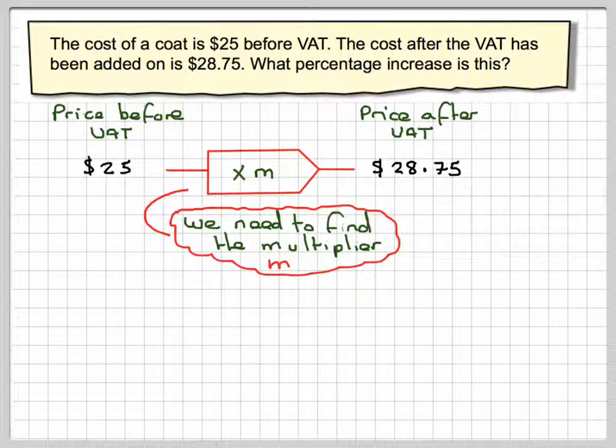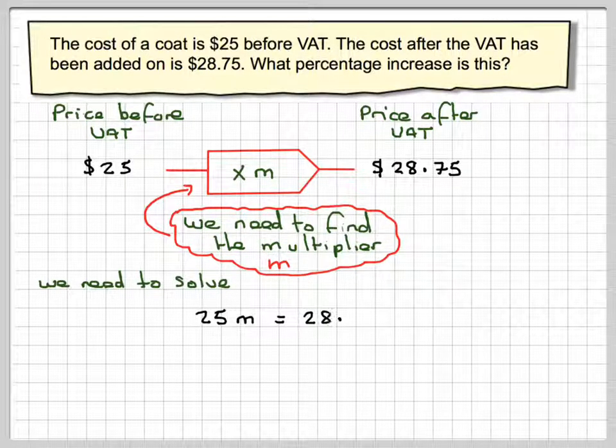So we can think of this as $25 times M, so we need to solve $25M equals $28.75.